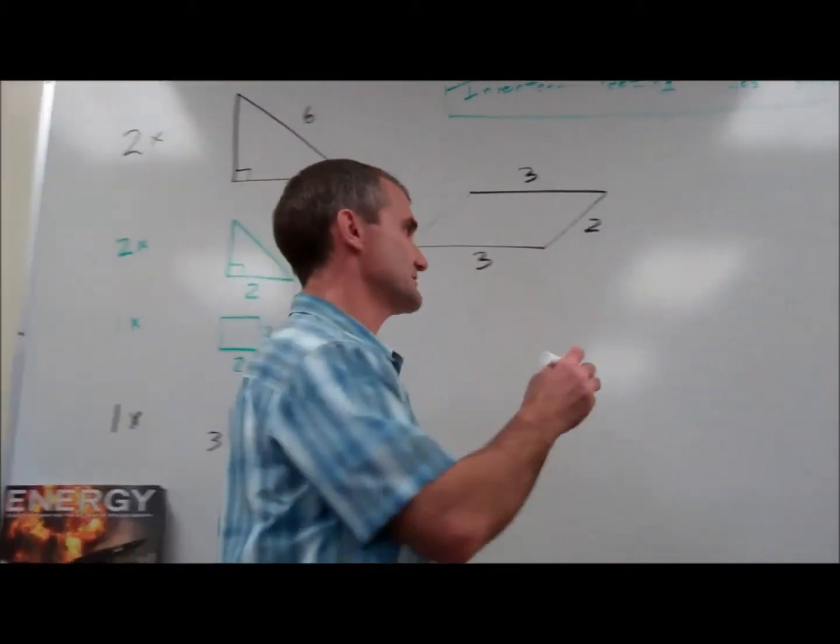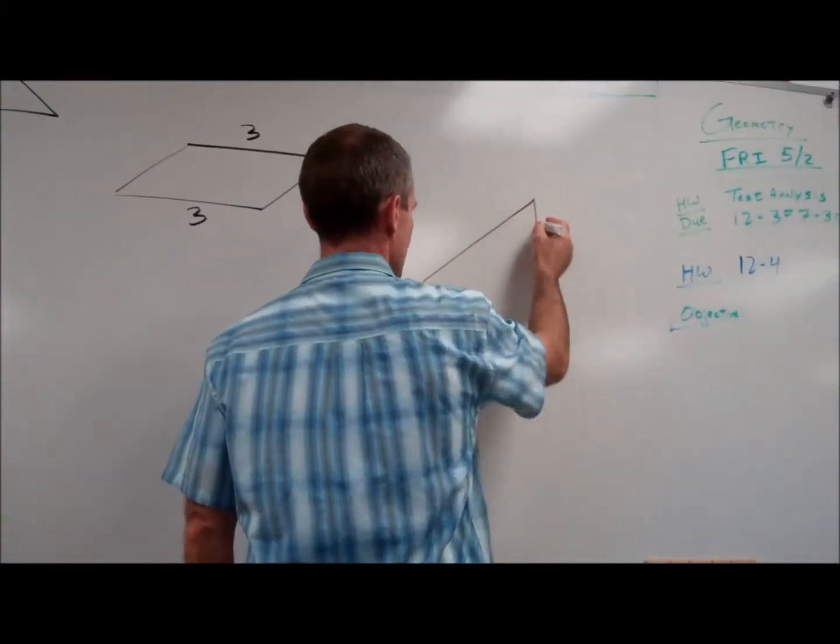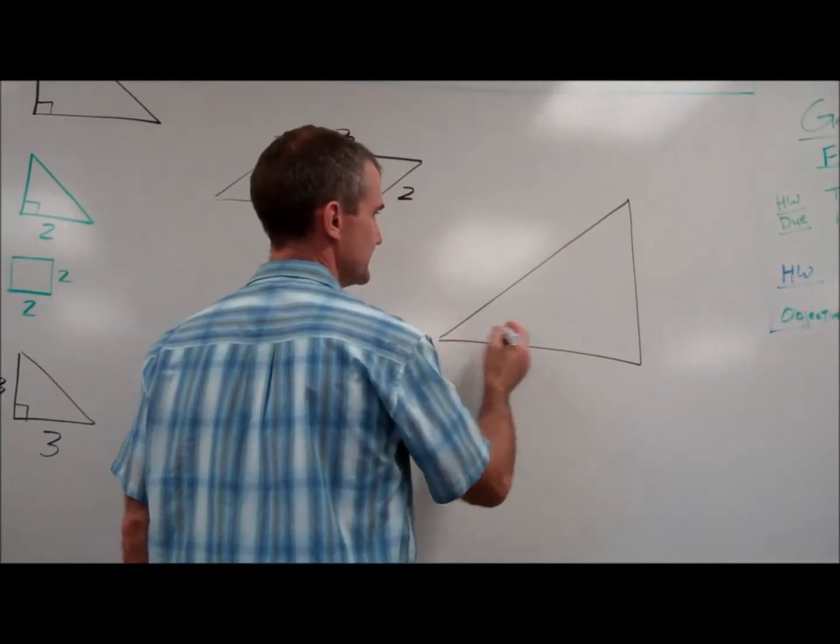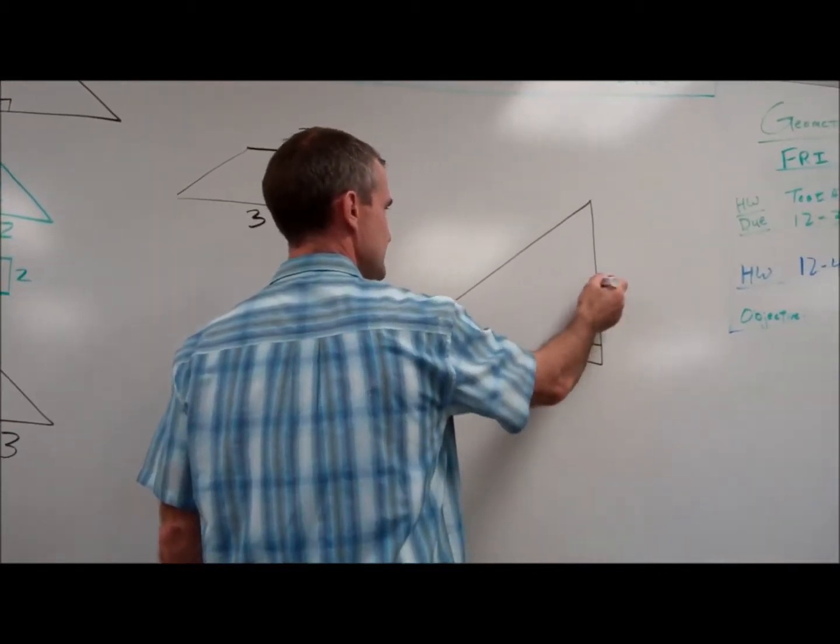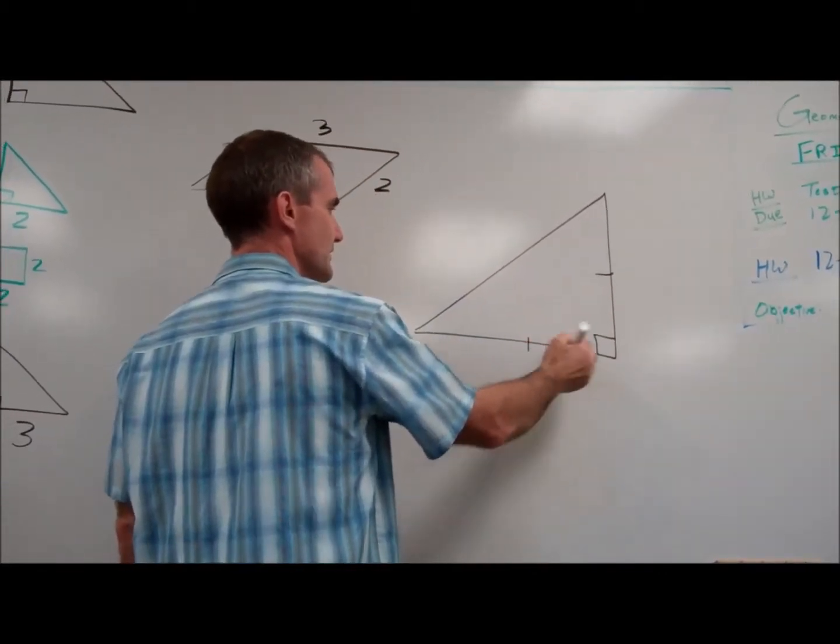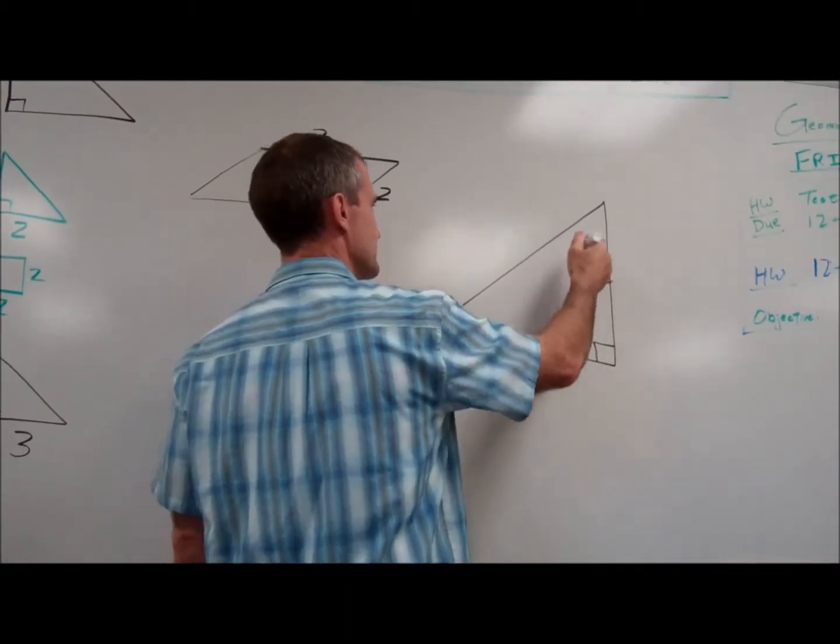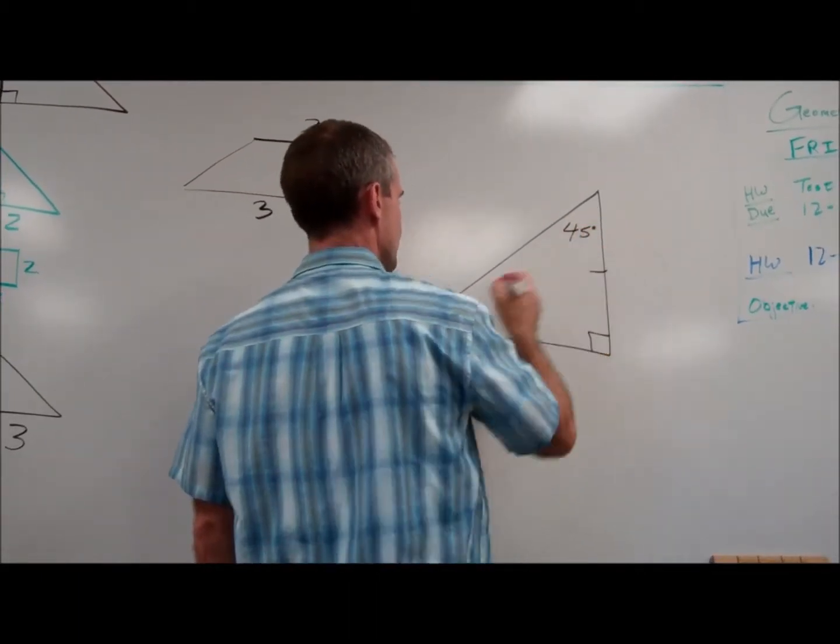Okay, here's the big concept first. What's really important is this isosceles right triangle. Isosceles means two legs are congruent. Right, there's a right angle. If the legs are congruent, the angles are congruent.